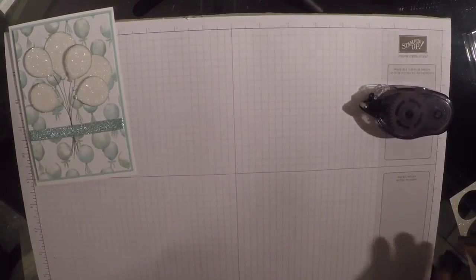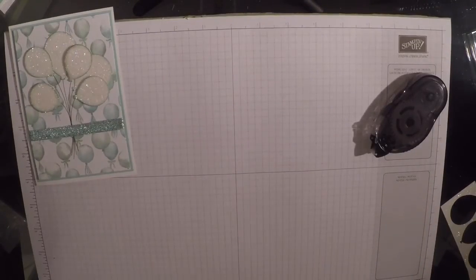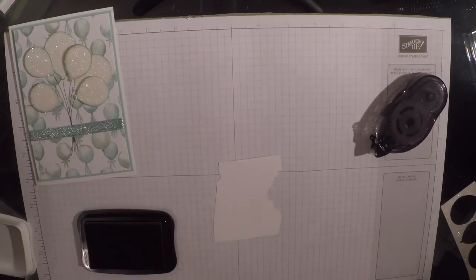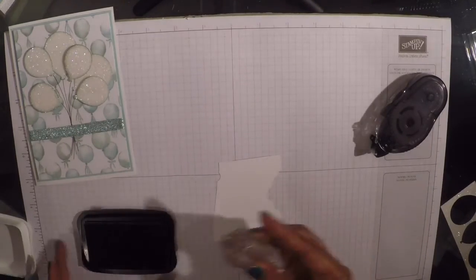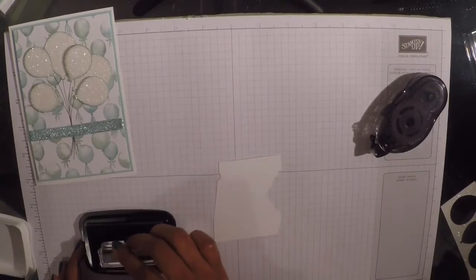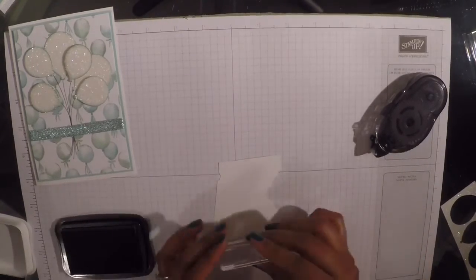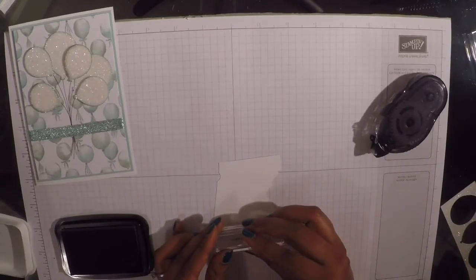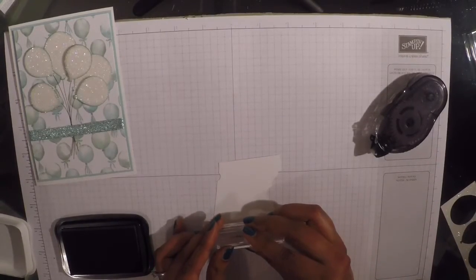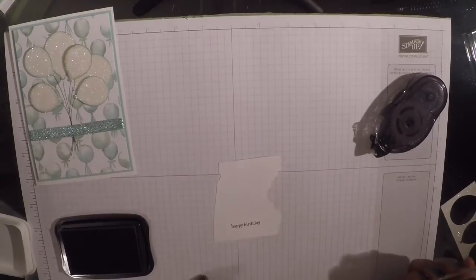Next, we're going to stamp our sentiment. So I'm just going to bring in a piece of scrap Whisper White cardstock. And I'm going to ink my sentiment up in the Memento black ink again. And I'm just going to stamp that down.